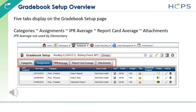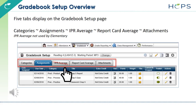Five tabs display on the Gradebook Setup page: Categories, Assignments, IPR Average, Report Card Average, and Attachments. The IPR Average is not used by elementary.